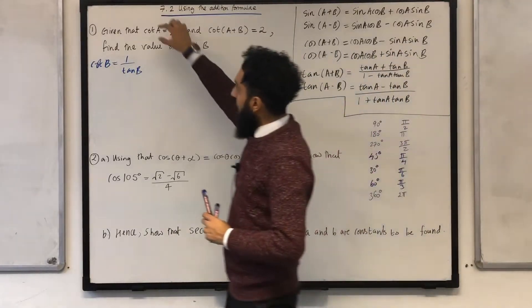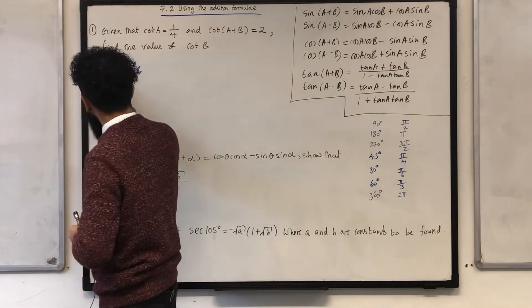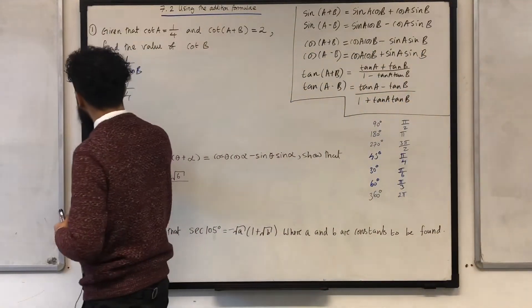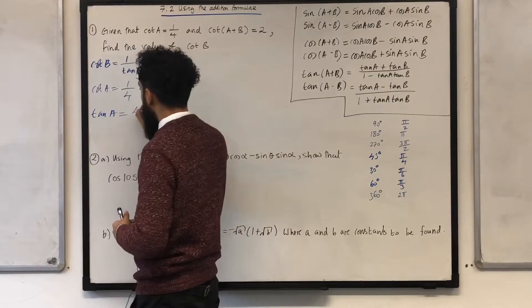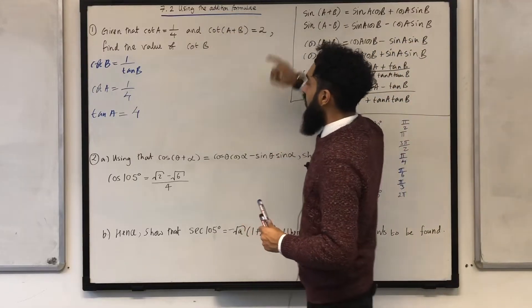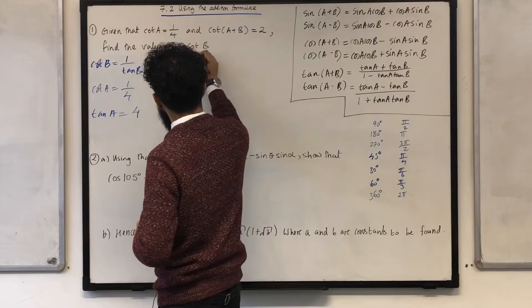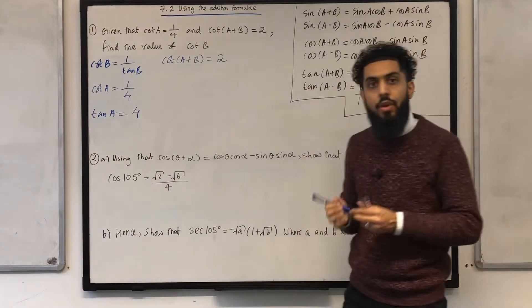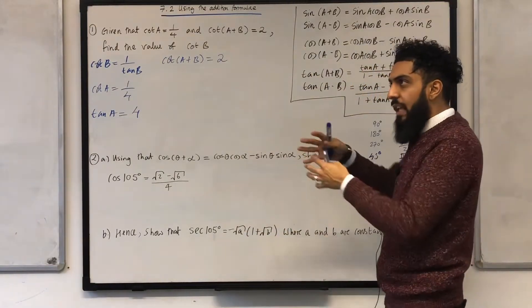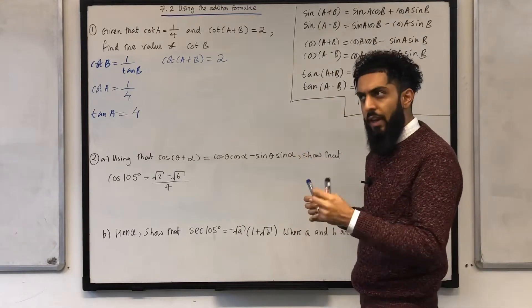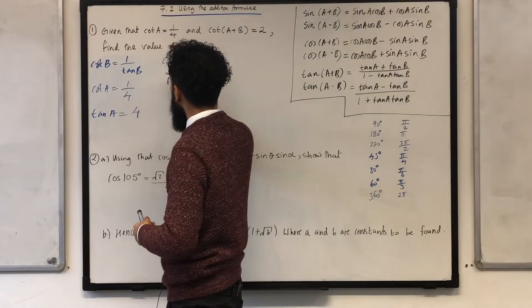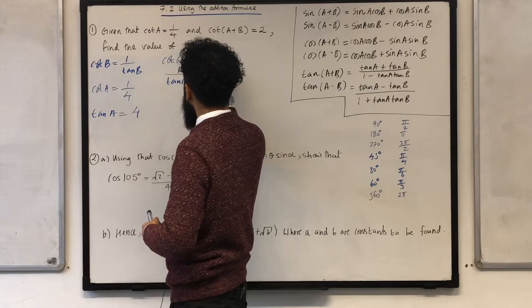Right, go back to the question. We know that cot a is equal to 1 over 4. I know that tan a is the reciprocal of cot a, so I can write tan a is equal to the reciprocal of 1 over 4, which is just 4. Okay, go back to the question again. You're given cot(a + b) equal to 2. The thing is, I don't know the addition formula for cot. So, what I can do is think about how cot is related to one of the other trig functions. Well, I know that cot is 1 over tan. So, cot(a + b) is equivalent to 1 over tan(a + b) equal to 2.